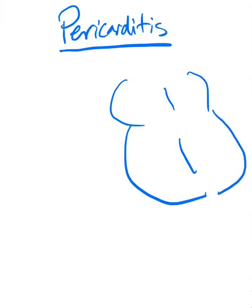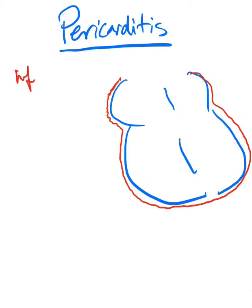Hello and welcome to our lecture today about pericarditis. Pericarditis means there's inflammation in the pericardial sac surrounding the heart. How does this inflammation happen? It can be an infection — most likely a viral infection. A patient might complain about chest pain or shortness of breath that increases whenever they're taking a deep breath.